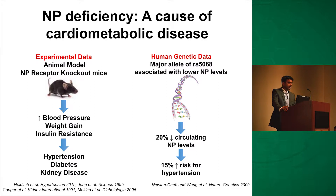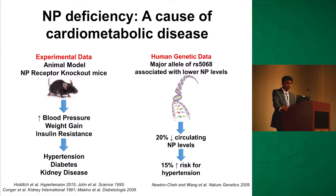NP deficiency as a cause of cardiometabolic disease — there is a plethora of animal data. There are many good animal papers where receptor knockout mice were shown to have high blood pressure, weight gain, and insulin resistance, leading to hypertension, diabetes, and kidney disease.